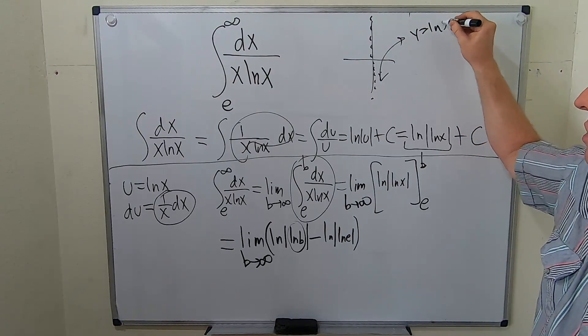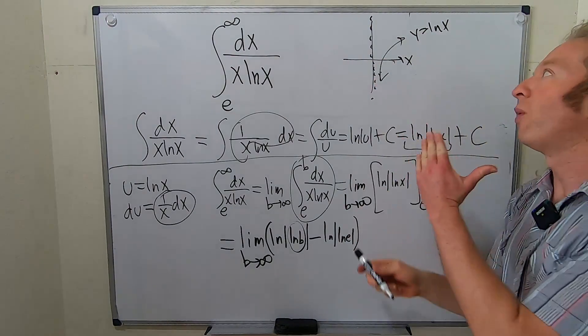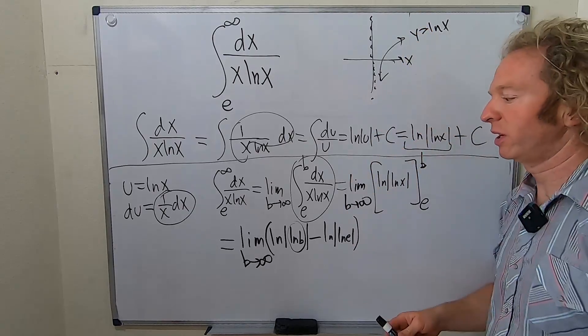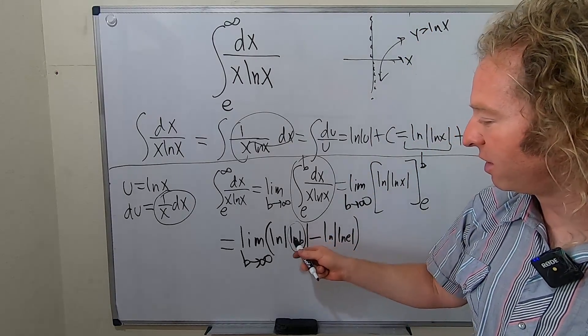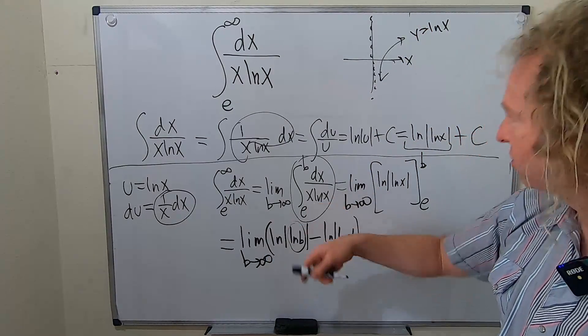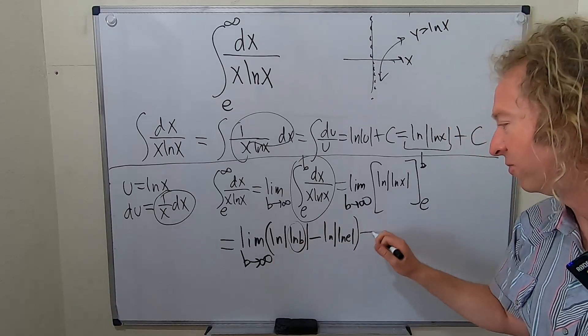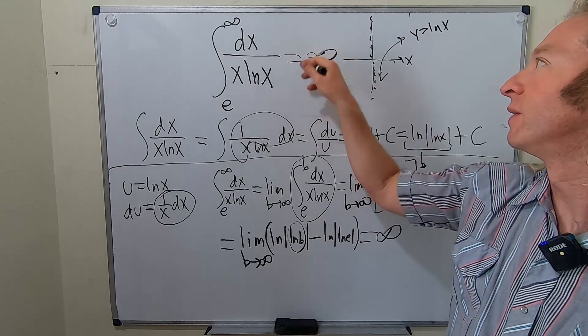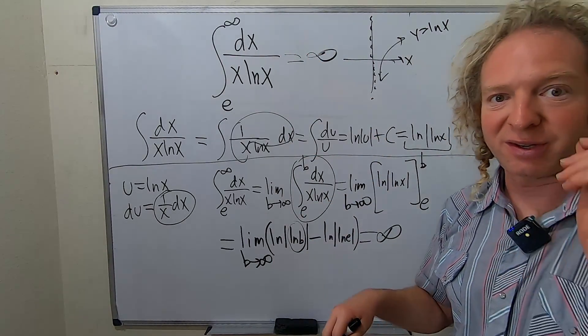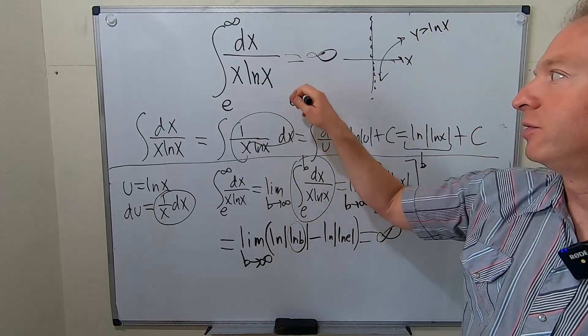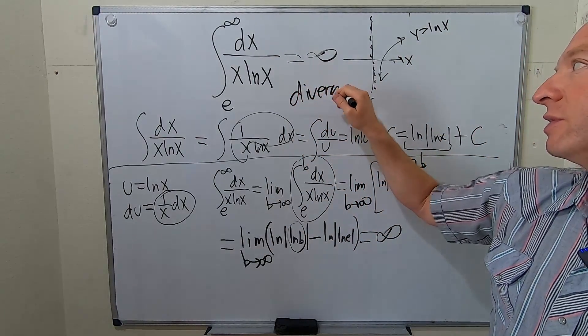So when x approaches infinity, the y values also approach infinity. So ln b approaches infinity, so you have ln of something approaching infinity, so it still approaches infinity. So this whole thing is equal to infinity. So this is equal to infinity, and so this improper integral is said to diverge. So this actually diverges.